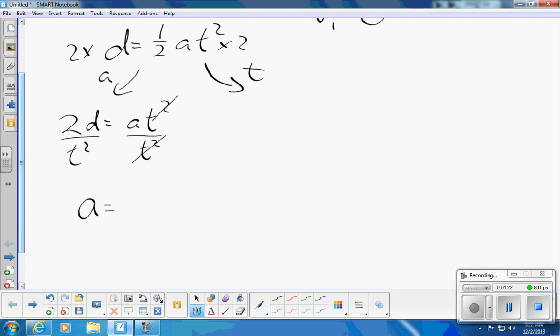And a is equal to 2d over t squared. Okay.